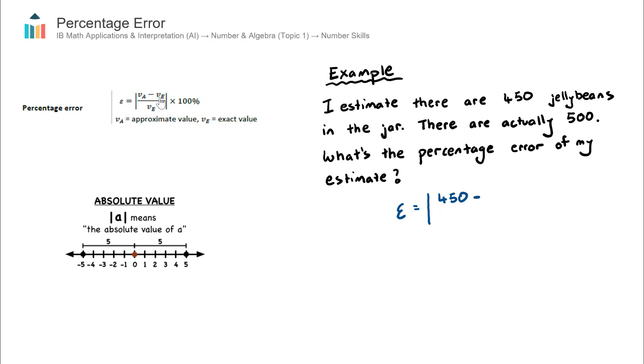Subtract the exact value, now the exact value in this example is 500, divided by the exact value again, 500.